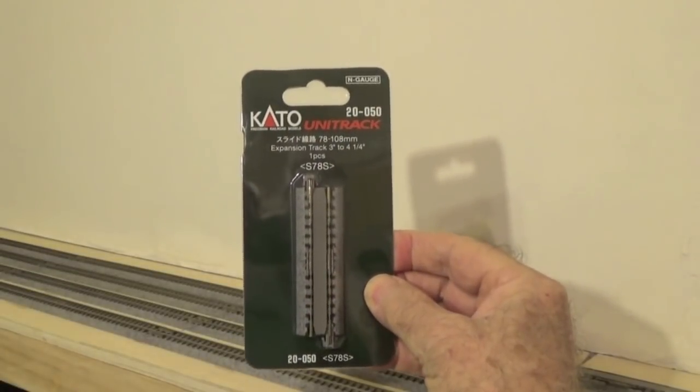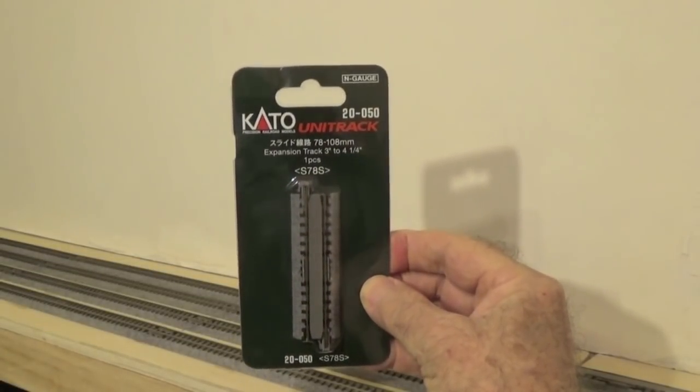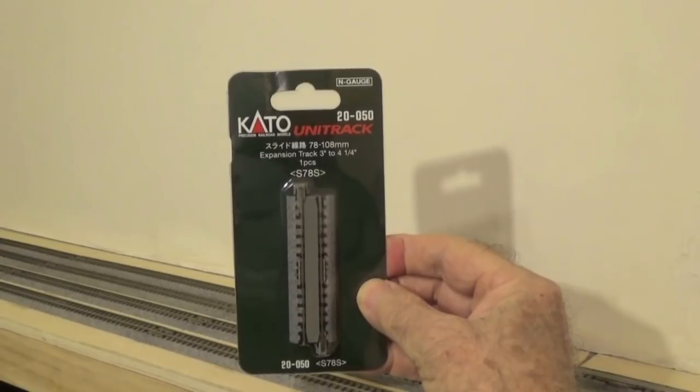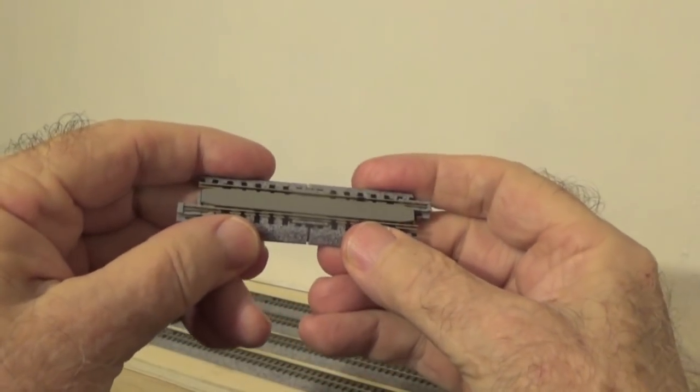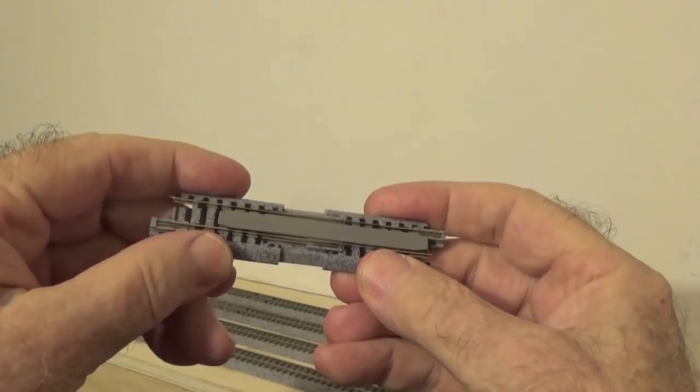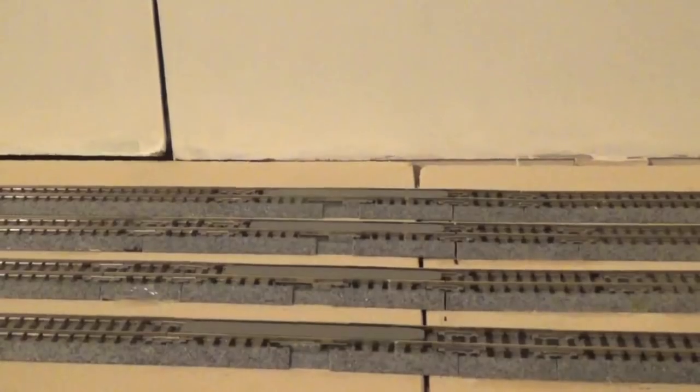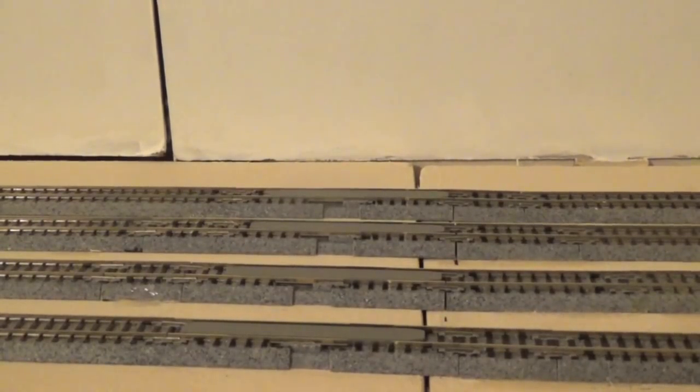These Kato expansion tracks are a critical part of the track work at the lift-out bridge. This is how the expansion tracks come and this is how they work. They can be extended from 3 inches to 4 and a quarter inches. Here you see the expansion tracks installed across the cut for the lift-out bridge.